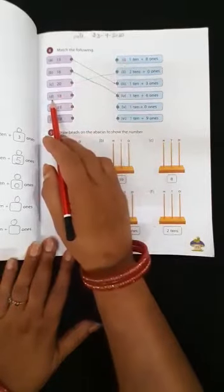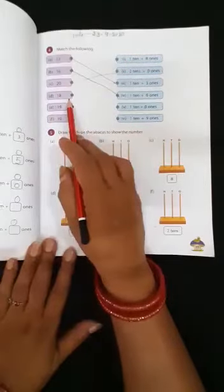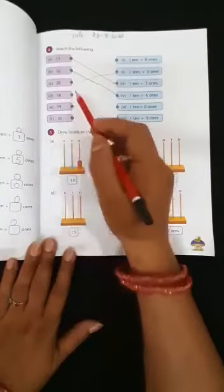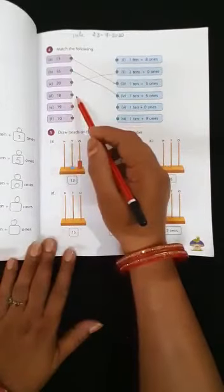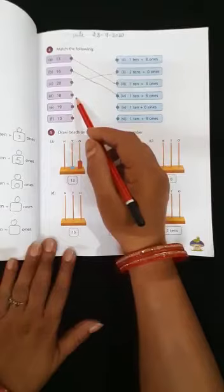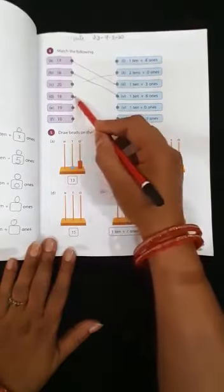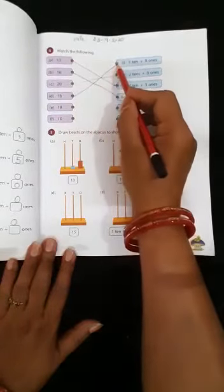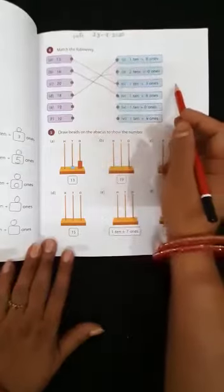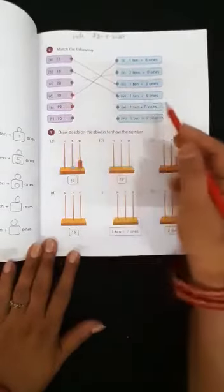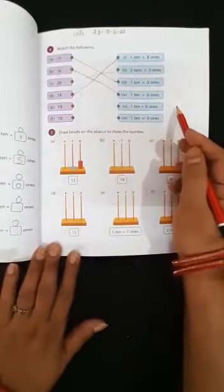Now D. 18. In 18 how many tens and how many ones? Yes, 1 ten plus 8 ones. Ok children. In this manner you should complete the remaining exercises.